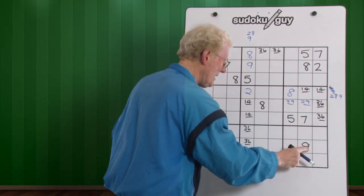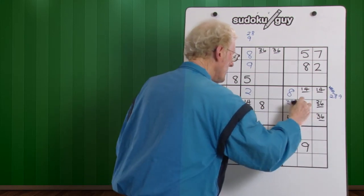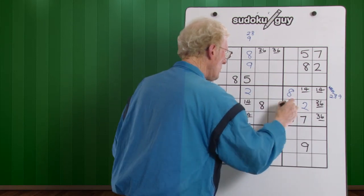But look down, and you'll see a nine here. So that immediately changes this to a two, and this to a nine.